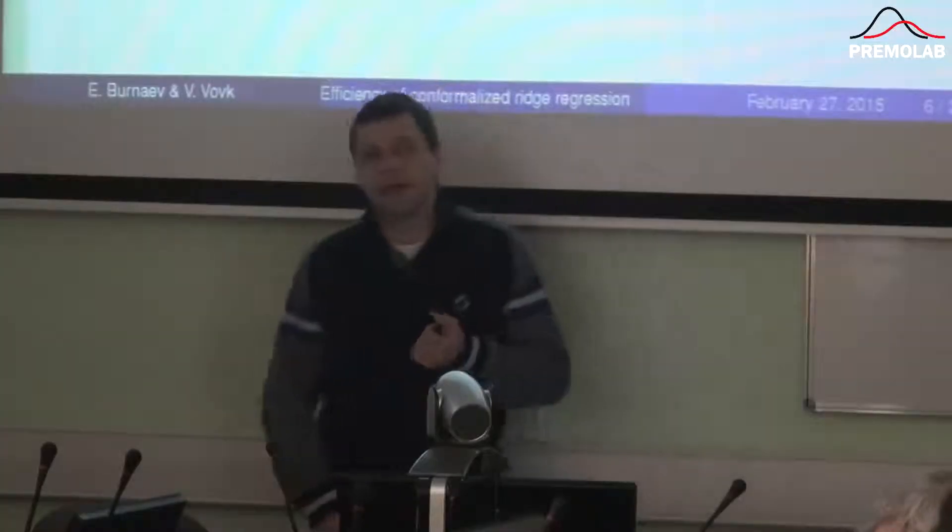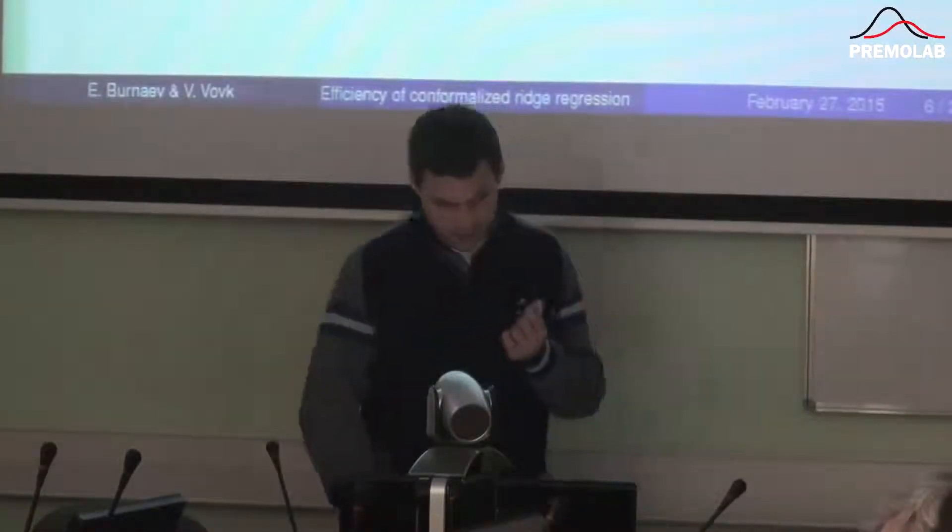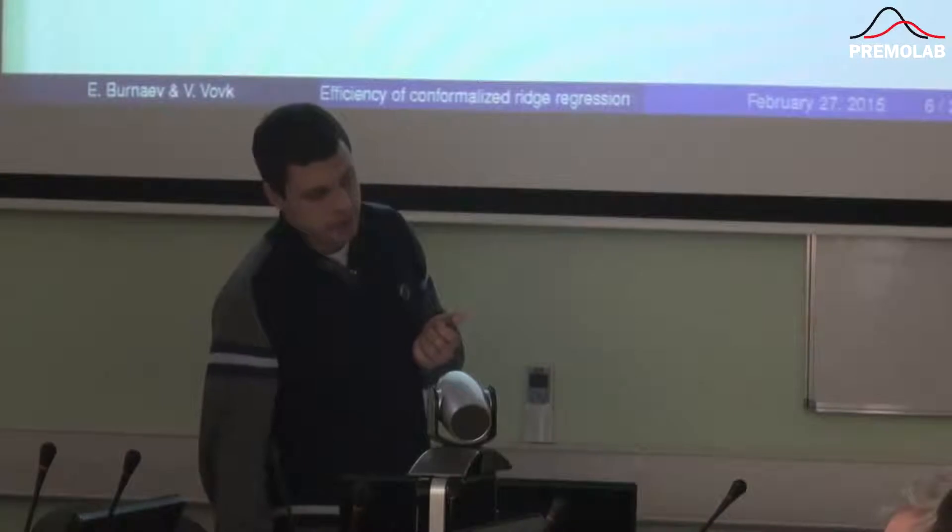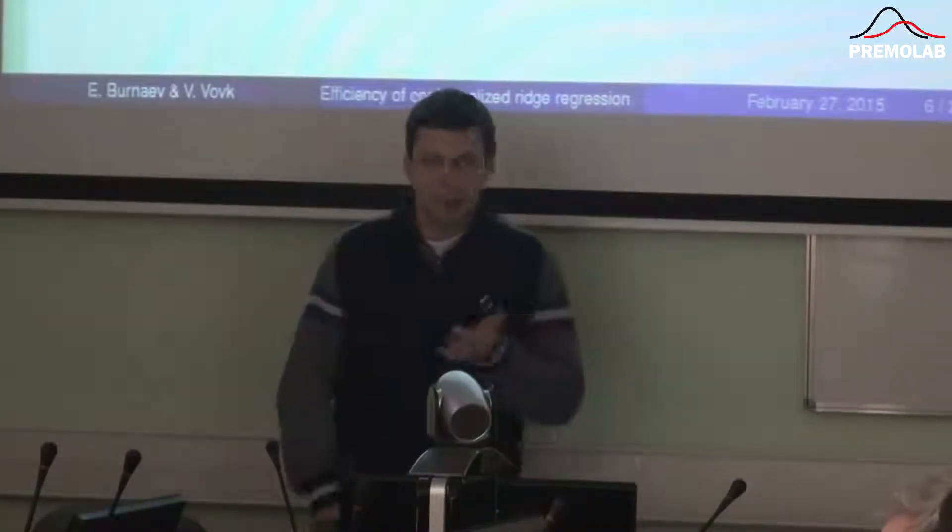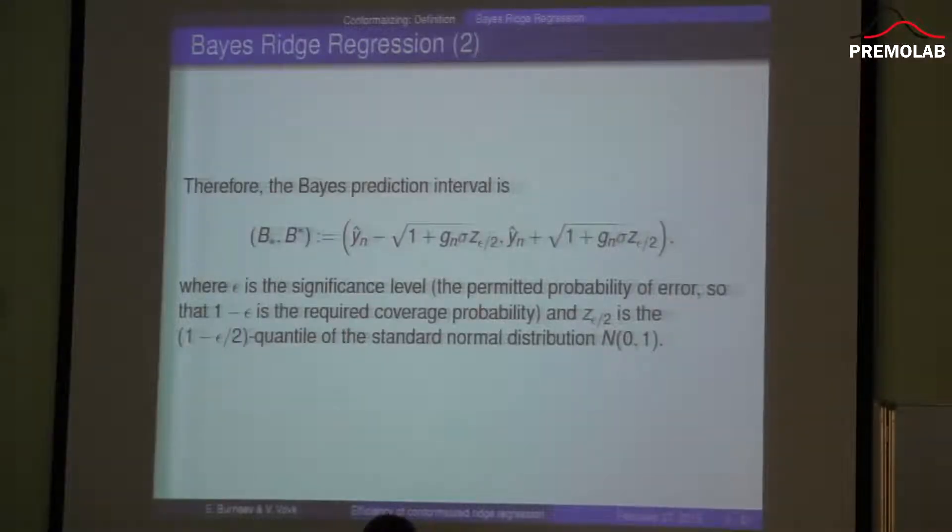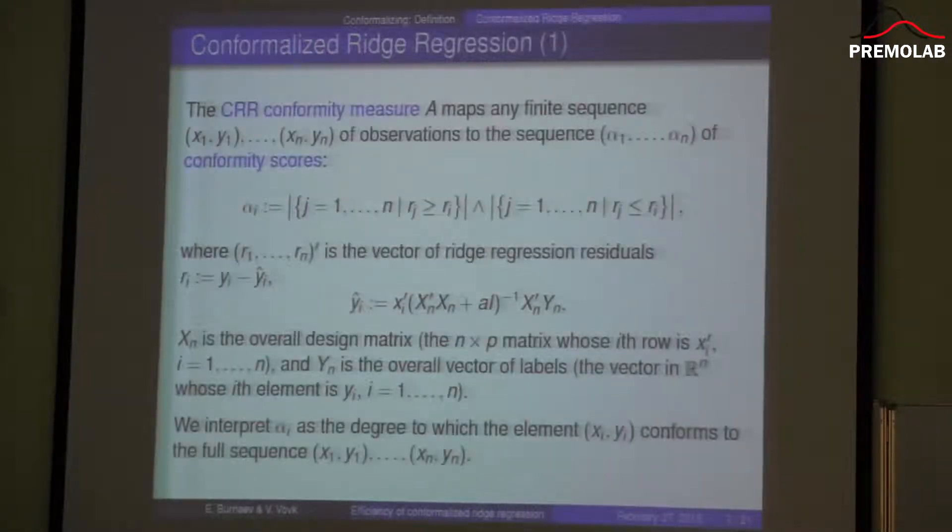This is posterior variance. J_n is just a factor which is needed to calculate this posterior variance. X denotes the design matrix for the training sequence and Y is the vector of the training labels. As you know, the Bayesian prediction interval looks like this, with Z_{ε/2} as quantiles of standard normal distribution. In case the Bayesian assumptions are valid, this is the most efficient optimal prediction interval.